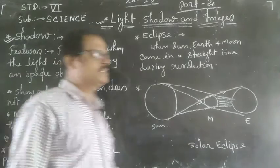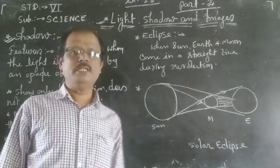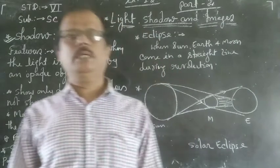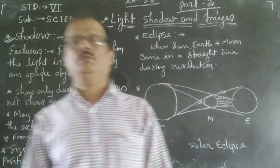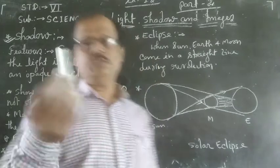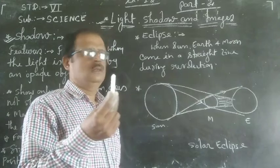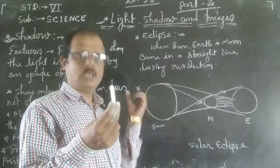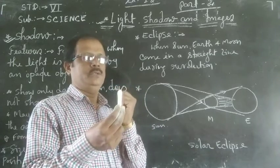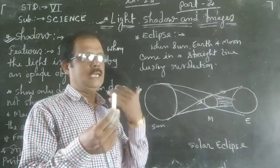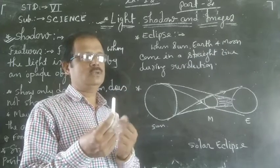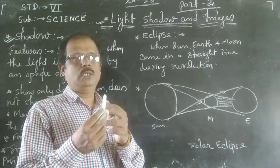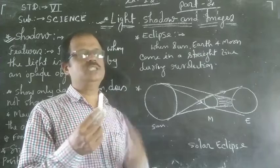In general terms, it is said that shadow is a dark patch formed when any opaque object comes in the way of a light source. Suppose this is a chalk — an opaque object. When we shine a light in front of the chalk, the light cannot pass through it, and there is a dark patch behind the chalk. This is called shadow.